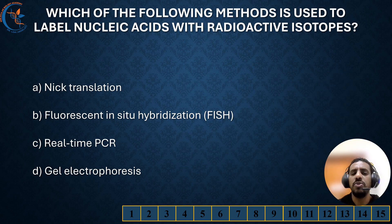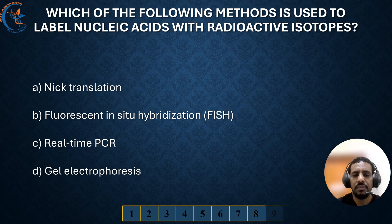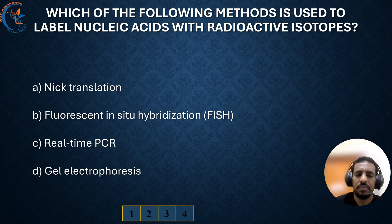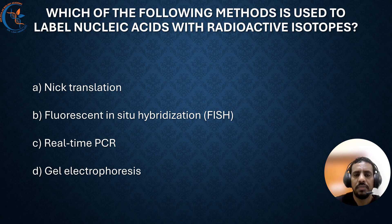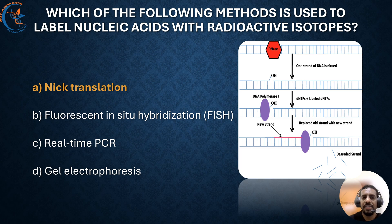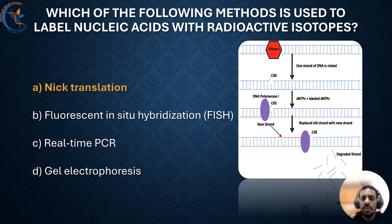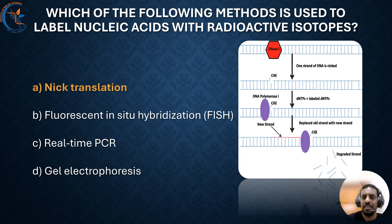Which of the following methods is used to label nucleic acid with radioactive isotopes? The correct answer is nick translation. Nick translation is the technique used to label DNA by introducing nicks, meaning single-strand breaks, in the DNA backbone using DNase I. Then DNA polymerase I extends the strand by adding new nucleotides, including labeled ones such as radioactive or fluorescent nucleotides. This method is commonly used for preparing labeled DNA probes for applications like Southern blotting and in-situ hybridization, enabling the detection of specific DNA sequences.